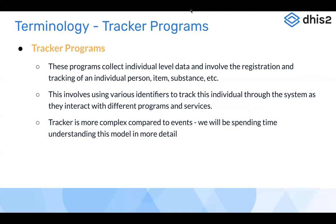For example, if I want to get enrolled in a malaria surveillance program, I need to provide demographic details: my name, age, phone number, and address. If I later need to get enrolled in an NCD surveillance program, the same profile can be enrolled into that program as well. One person can get registered once in the system and then be enrolled into several programs over time depending upon the services the beneficiary needs.